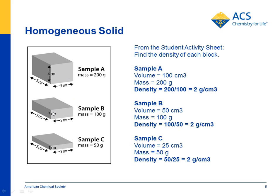If you take sample A and cut it in half, you'll have half the amount of matter — 5 by 5 by 2, so it's 50 cubic centimeters. But it must have half the mass, because you have half as much stuff. If you do the math, you end up with 2 grams per cubic centimeter. And if you cut that one in half again, the density is constant — it's 2 grams per cubic centimeter.